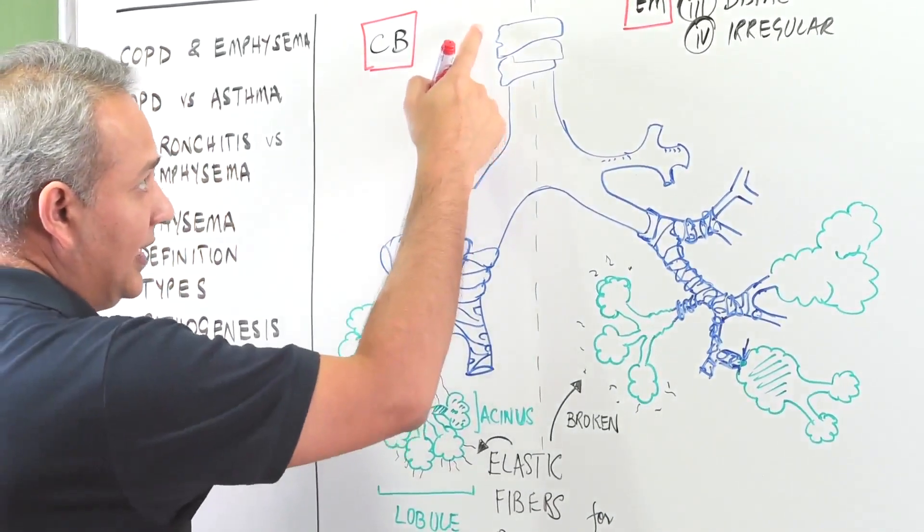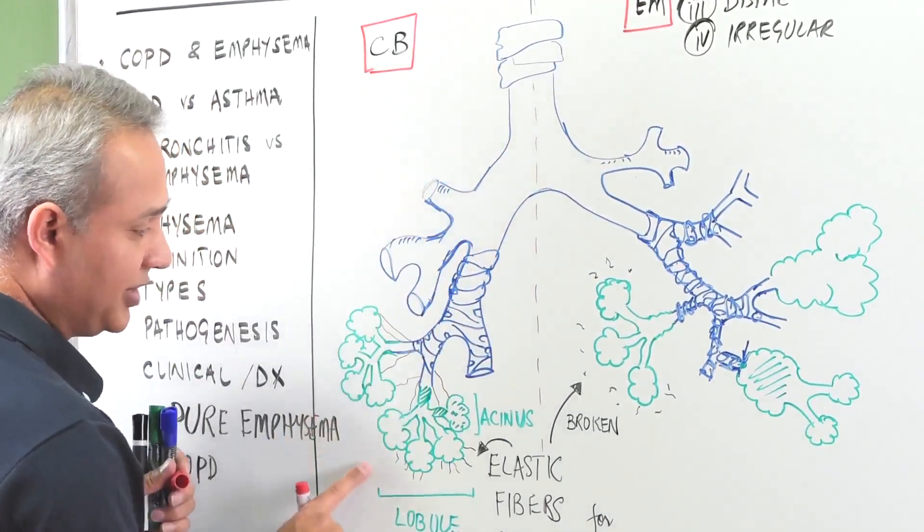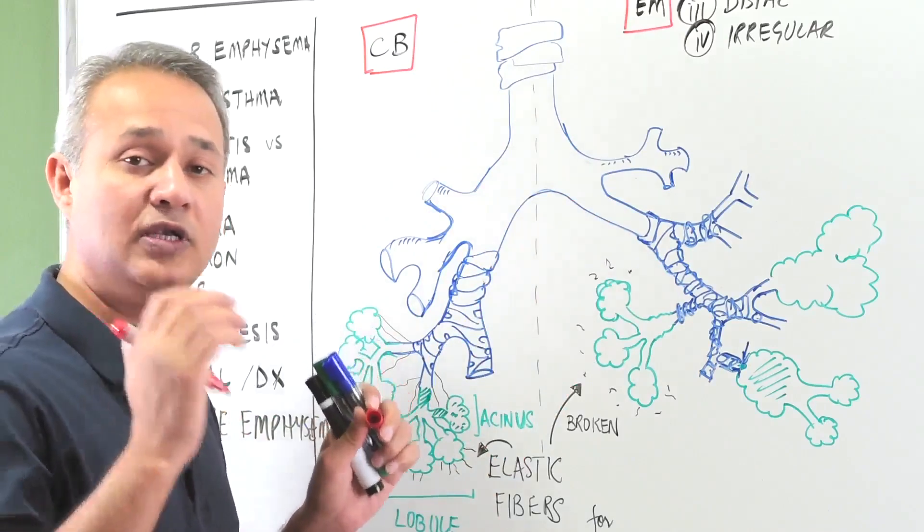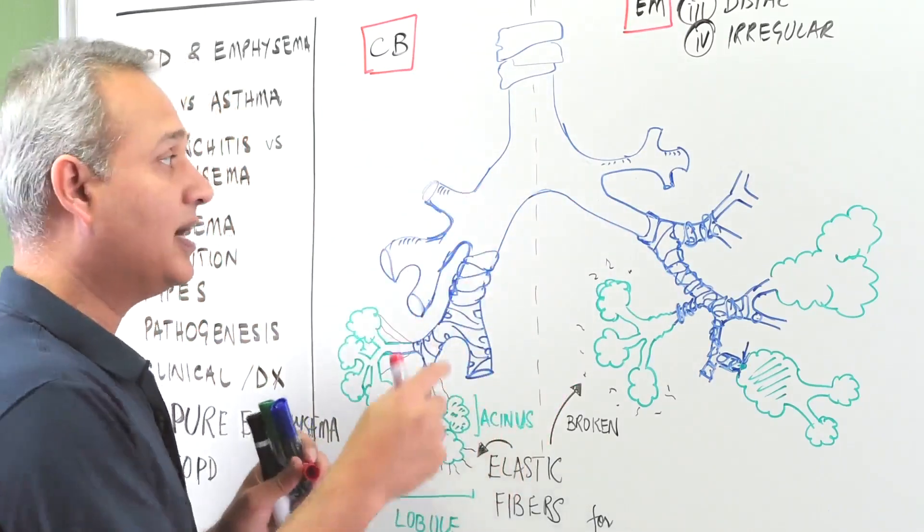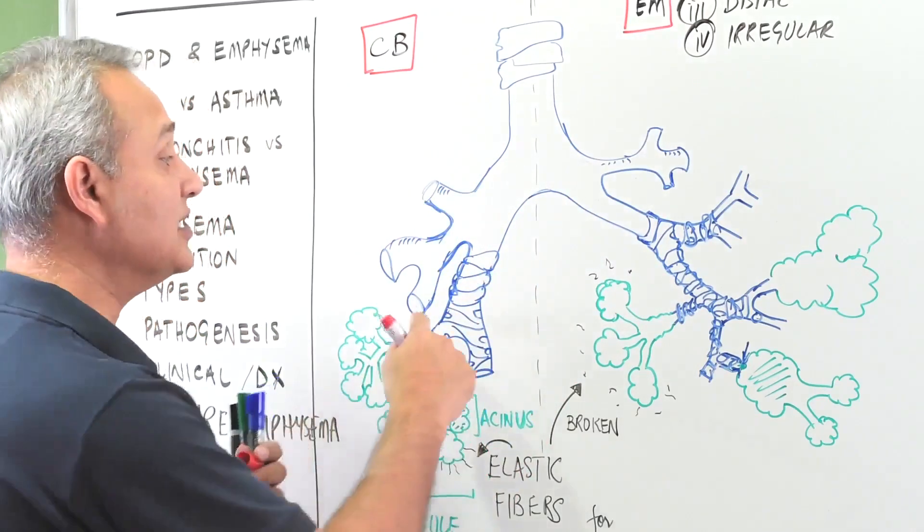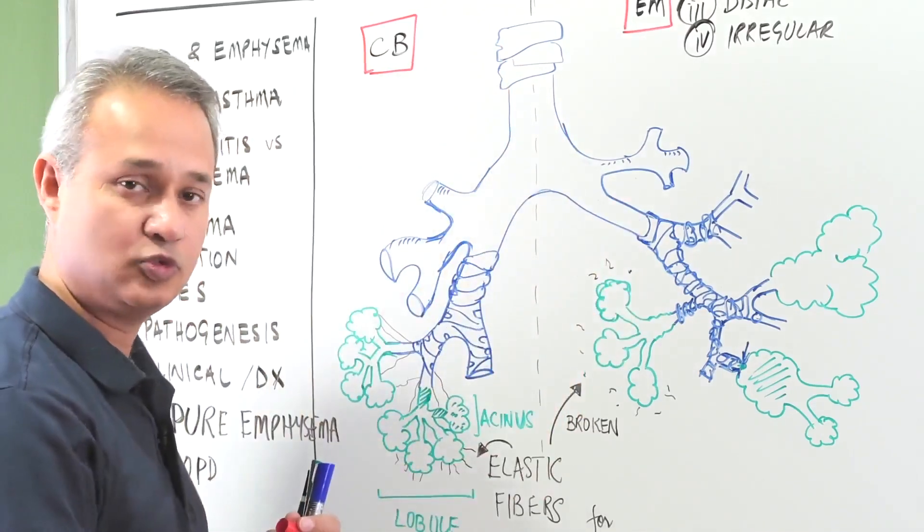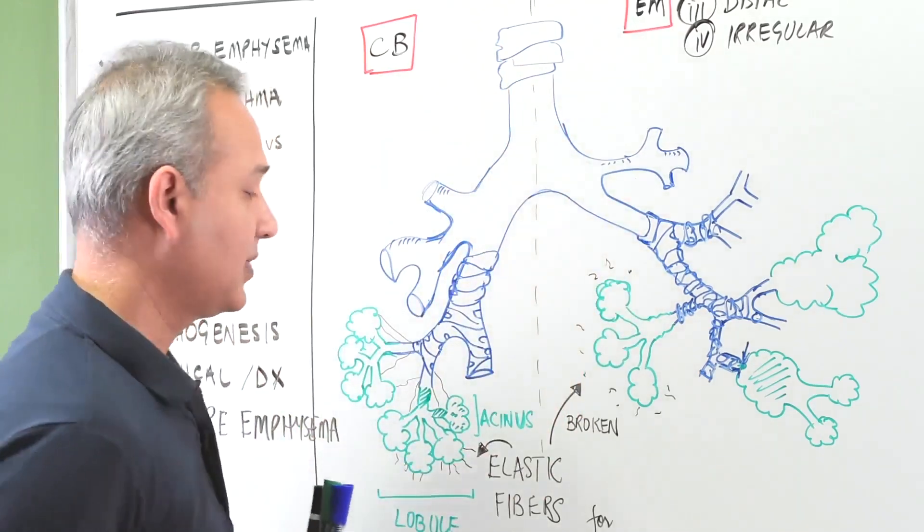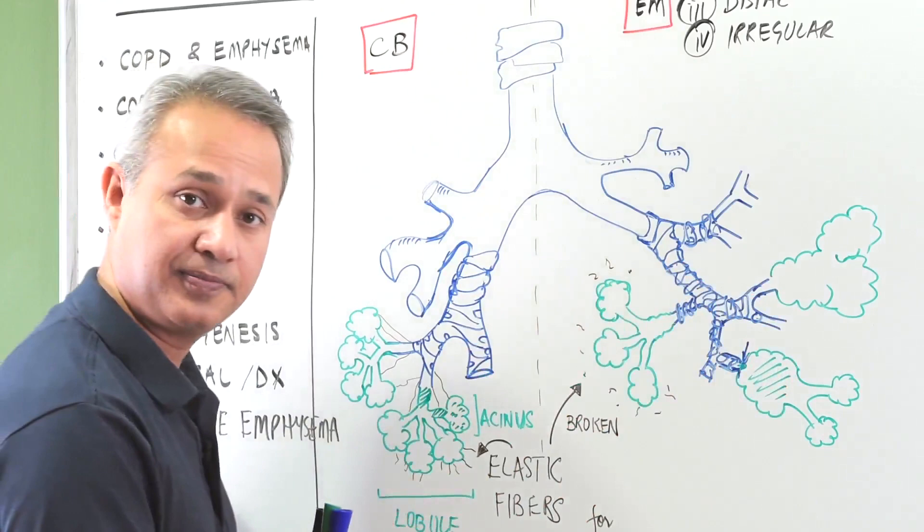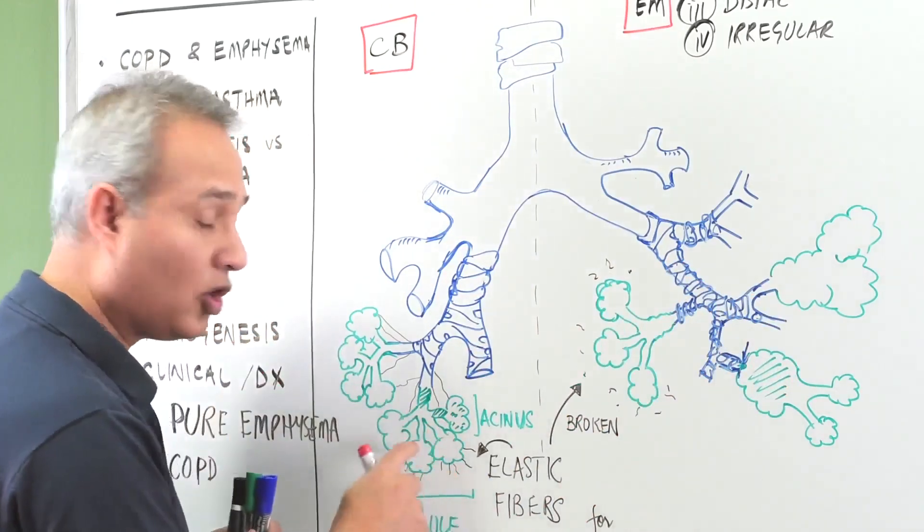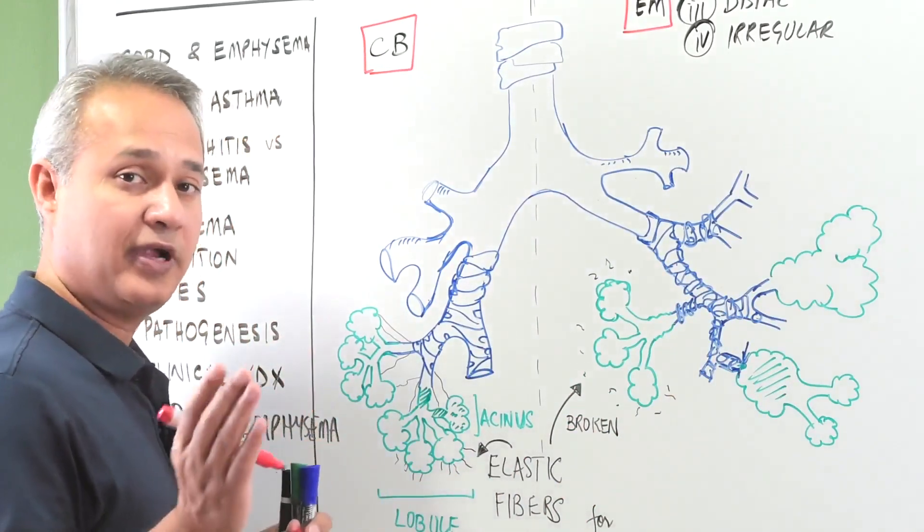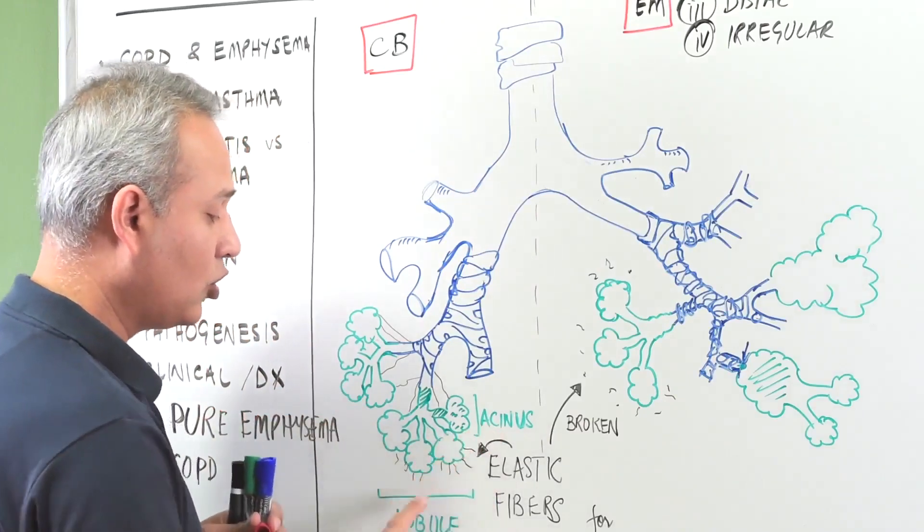The airways are drawn in blue and green. The blue airways only allow air to move through them, but there is no gas exchange through their membrane. Oxygen and carbon dioxide are not exchanging through the blue parts - that's just a passageway, so we call them airways. The green parts are where gas exchange occurs. That area will be called air spaces, or more accurately, acini or lobules.